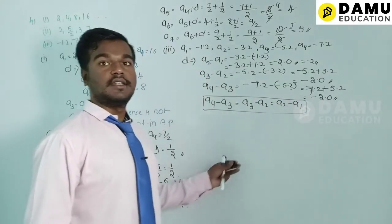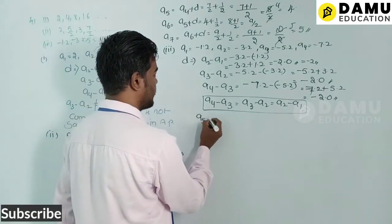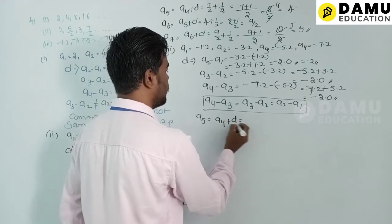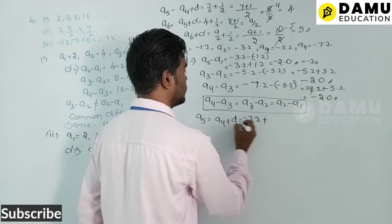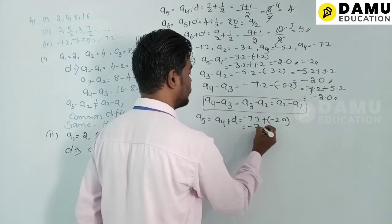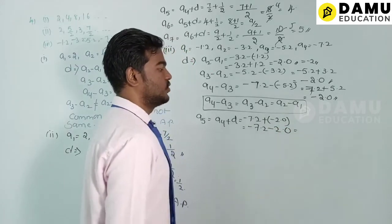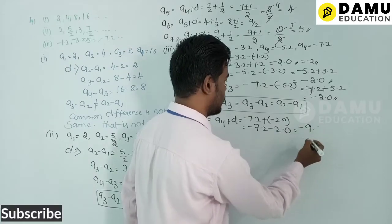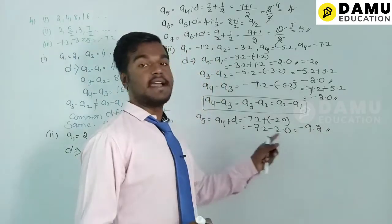The series is in AP. Now a5 = a4 + d = −7.2 + (−2.0) = −7.2 − 2.0 = −9.2.